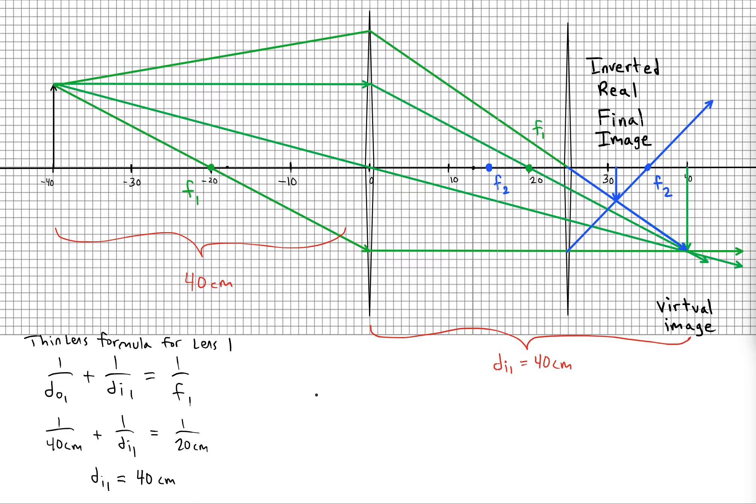Next we want to use the formula for figuring out what our object 2 distance is. So for that we had used this in the past: DI1 plus DO2 equals the lens separation.